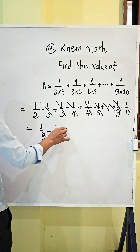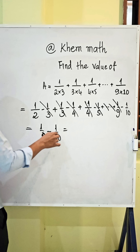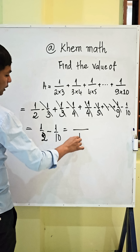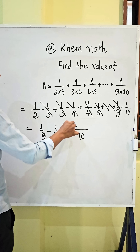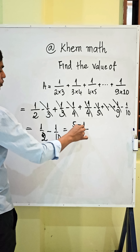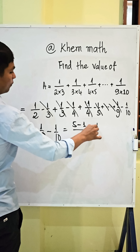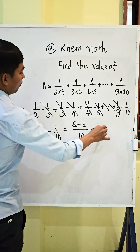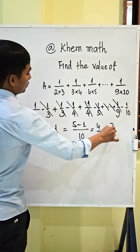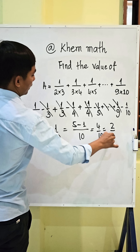And we get this: 10 is the denominator. Times 5, we get 5 minus 1, and we get 4 divided by 10. We simplify by 2, and we get 2 divided by 5. That's our answer.